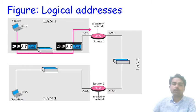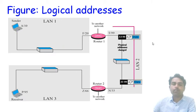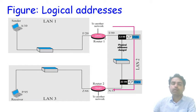At router R1, only the physical addresses change. The physical address 20 of router R1 becomes 99, and 33 is the destination of the next router. The logical addresses of sender and receiver remain the same, and the data content is unchanged. Only the physical addresses are changed because the data is now being sent from router R1 onward.